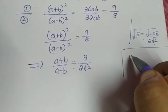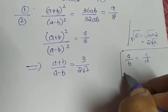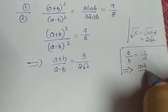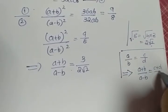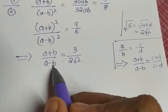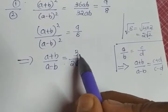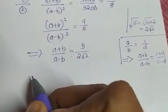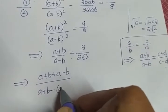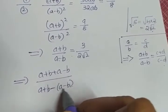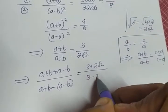We are going to apply the componendo-dividendo formula which we have studied in earlier classes. If A by B equals C by D, then componendo-dividendo says A plus B divided by A minus B equals C plus D by C minus D. Applying this here, the numerator plus denominator divided by their difference equals: A plus B plus A minus B divided by A plus B minus A minus B, which equals 3 plus 2 root 2 divided by 3 minus 2 root 2.